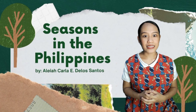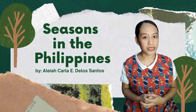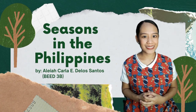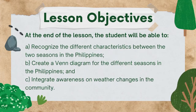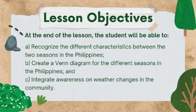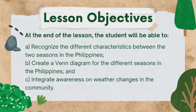To start our class, let us all read our lesson objectives. At the end of the lesson, you should be able to recognize the different characteristics between the two seasons in the Philippines, create a Venn diagram for the different seasons in the Philippines, and integrate awareness on weather changes in the community.